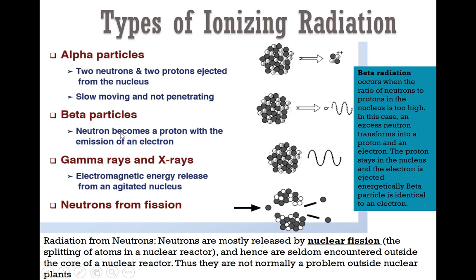On the other hand, beta particles are much lighter. It's a neutron that is turning itself into a proton, and as it turns the neutron into a proton, it ejects an electron in this process. Beta radiation occurs when the ratio of neutrons to protons in the nucleus is too high. An excess neutron transforms into a proton and an electron — the proton stays in the nucleus and the electron is ejected. Energetically, a beta particle is identical to an electron.